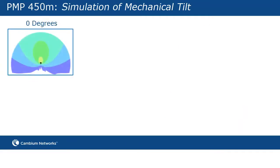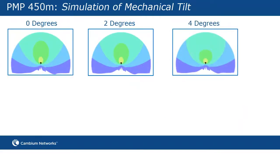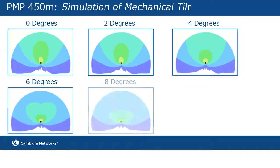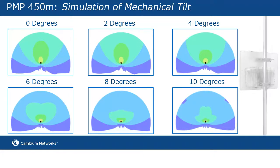With mechanical tilt alone, coverage becomes deformed as tilt departs from 0 degrees. Electrical tilt allows for a certain amount of down tilt without any deformation. As a result, because PMP450M includes 2 degrees of electrical tilt, you don't need as much mechanical tilt to avoid deformation.